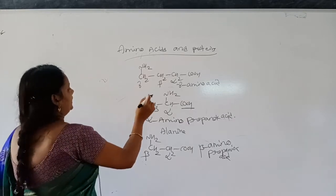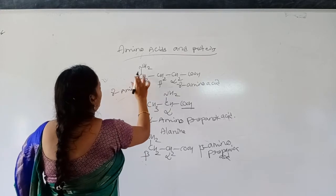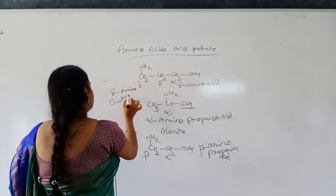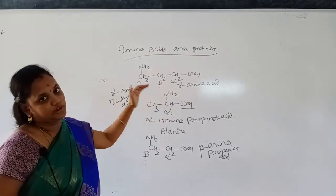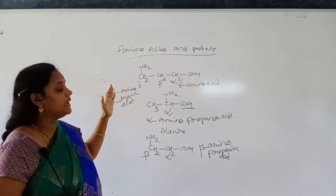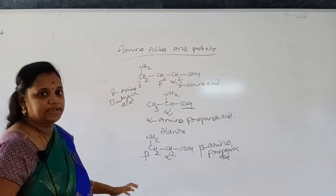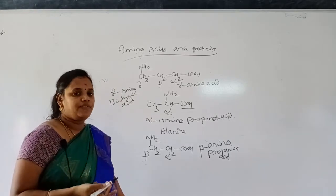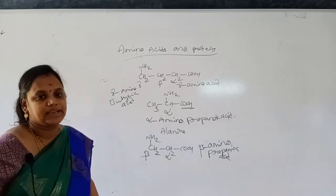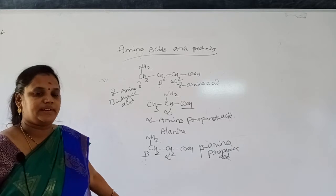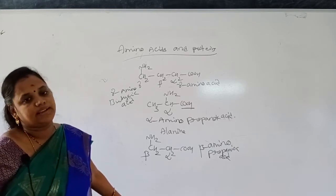What is the name of that acid? Gamma amino — one, two, three, four — butyric acid. So it is gamma amino butyric acid. Of all these acids, proteins on hydrolysis give alpha amino acids. So generally, instead of calling them alpha amino acids, we call them simply amino acids. Alpha amino acids and amino acids are one and the same.